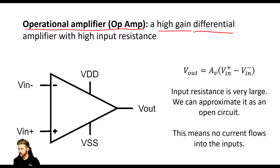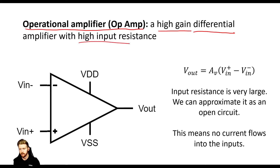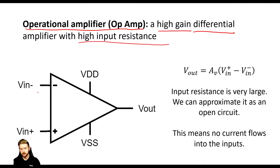Differential tells us that it is going to be amplifying or giving gain to some differential signal — meaning it's going to take the difference between two signals. You might see there are two terminals on this op amp: VN+ and VN-. Those are the two input terminals, and the difference between those two signals is going to be amplified. The high input resistance tells us that the input resistance is so high that very little current is going to flow into any of these input terminals.